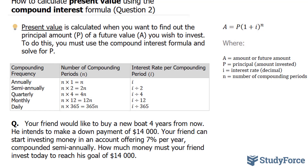So your friend doesn't have $14,000 right now, but the boat that he's looking to buy 4 years from now is $14,000. He wants to know how much money he needs to put in a bank account right now, which offers 7% interest, to get $14,000 within 4 years' time. To do this, we need to solve for P.